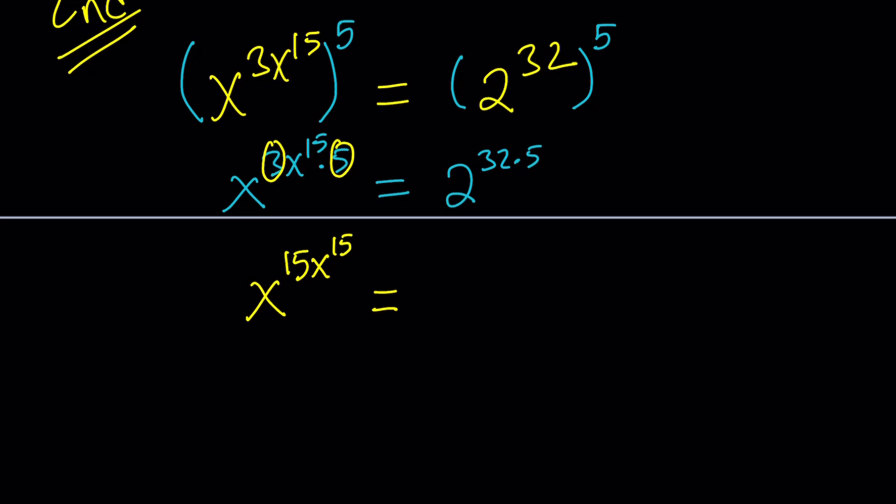So, the right-hand side, I want to bring this 5 over inside. So, I can write this as 2 to the 5th to the power 32. And why am I doing it? Because 2 to the 5th, again, is 32. When I do that, the base and the exponent are going to be the same. Make sense?